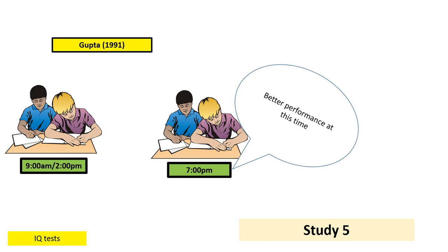Gutta in 1991 supported this, finding that students perform better at IQ tests at 7 o'clock in the evening than at 9 o'clock in the morning or at 2 p.m. in the afternoon. This suggests that our endogenous pacemaker — that is our body temperature — interacts with the exogenous zeitgebers, in this case the time of day and amount of light, to affect our behaviour. In this case, it affects our cognitive abilities.